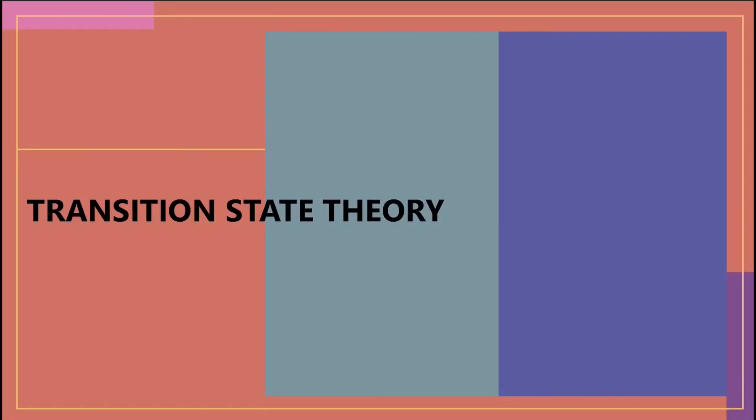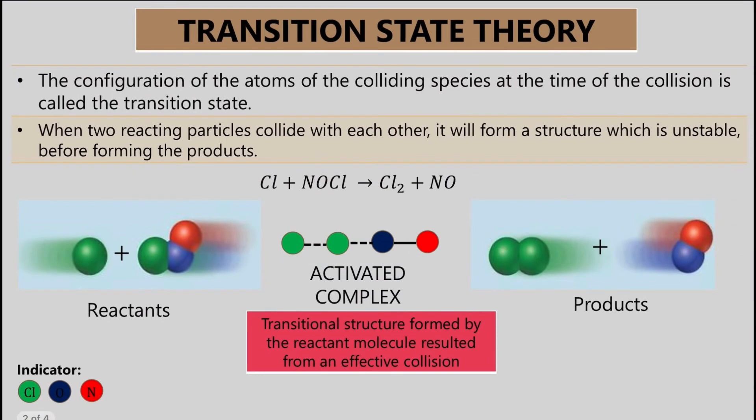Next, let's take a look at transition state theory. Apa yang dimaksudkan dengan transition state? Transition state ini adalah configuration of the atoms of the colliding species at the time of the collision.